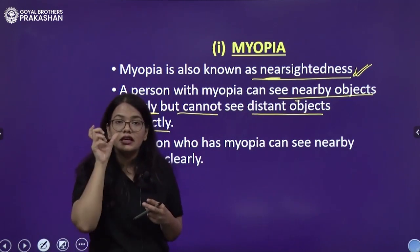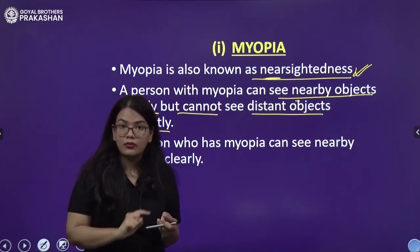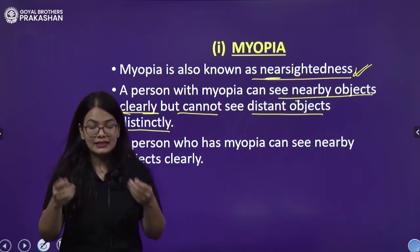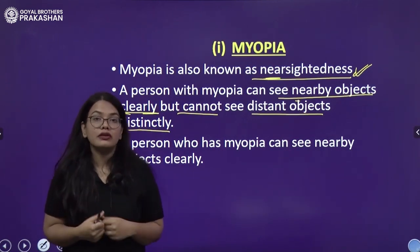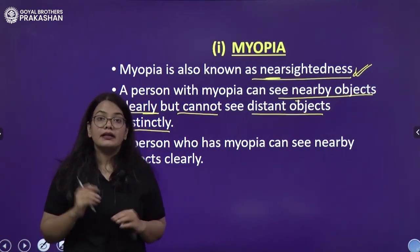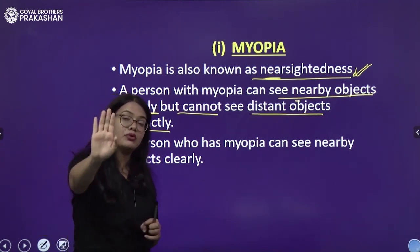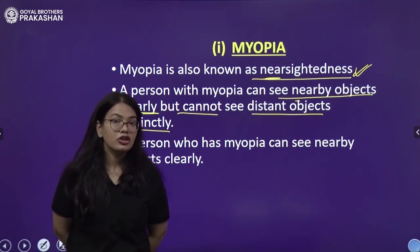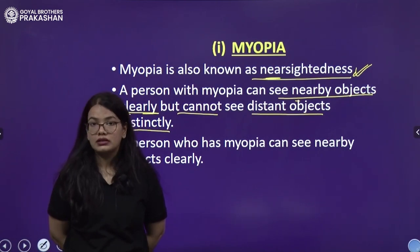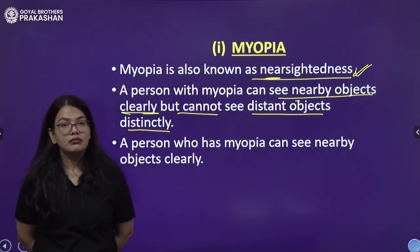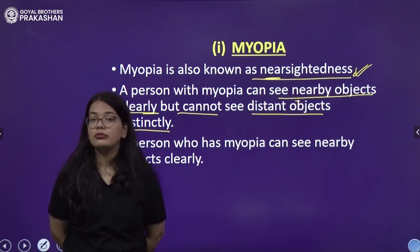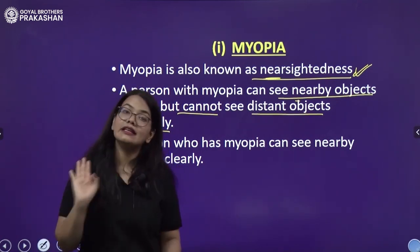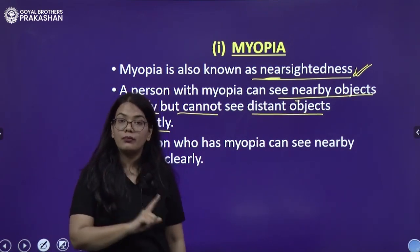A myopic person can see objects which are closer. Even if I remove my glasses and bring the book closer, I can easily read it. But without my glasses, if I take the book far apart or look at the board, I won't be able to see what is written. Suppose I am sitting at the third or fourth desk — I won't be able to read the board. But if I go very close to the board, I can easily read it.